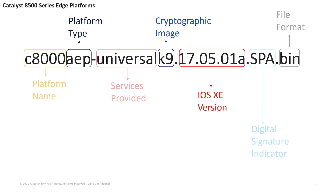Following, K9 represents that this is a cryptographic image. Then you'll see the full version release, which is 17.5.1a. Maybe you've seen the letters SPA in your file name before. Basically, S means it is digitally signed software, P stands for production, and A is the key version, which is alphabetical — so it can also be B, C, D, and so on. Then followed by the file extension type of bin.